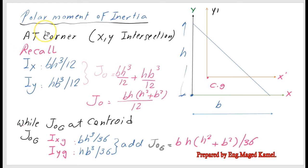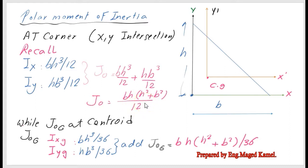For the polar moment of inertia at the external x and y axes: Ix = bh³/12 and Iy = hb³/12. Adding them gives J = bh/12·(h² + b²). For the polar moment of inertia at the centroid: Ix_CG = bh³/36 and Iy_CG = hb³/36, so J_CG = bh/36·(h² + b²). Thanks a lot and see you in the next lecture.